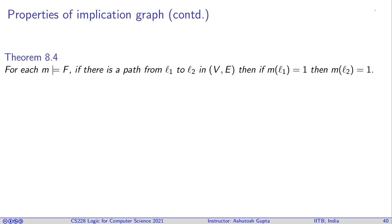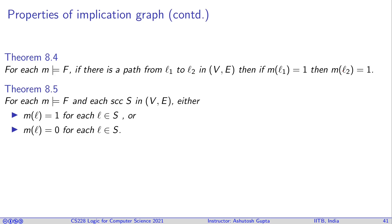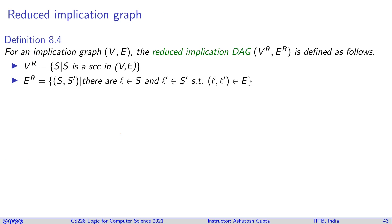For any model M satisfying F, if there is a path from L1 to L2 and M(L1)=1, then M(L2)=1. Consequently, for any model M and any SCC S, either all literals in S are set to 1 or all are set to 0 — because as soon as one is set to 1, all reachable literals must also be 1. This means we can treat each SCC as a single unit.